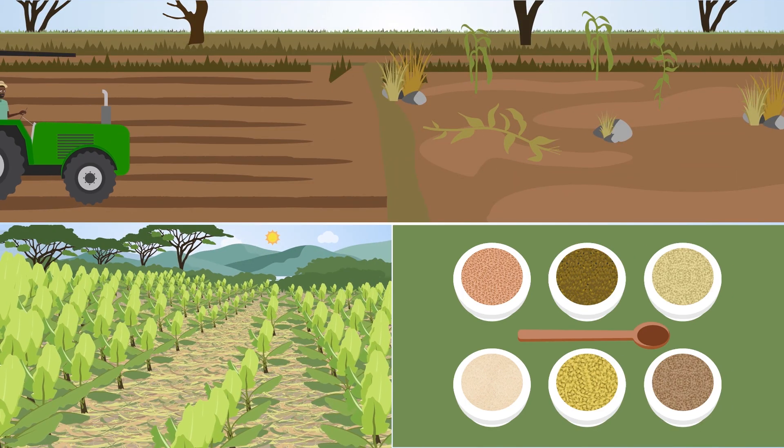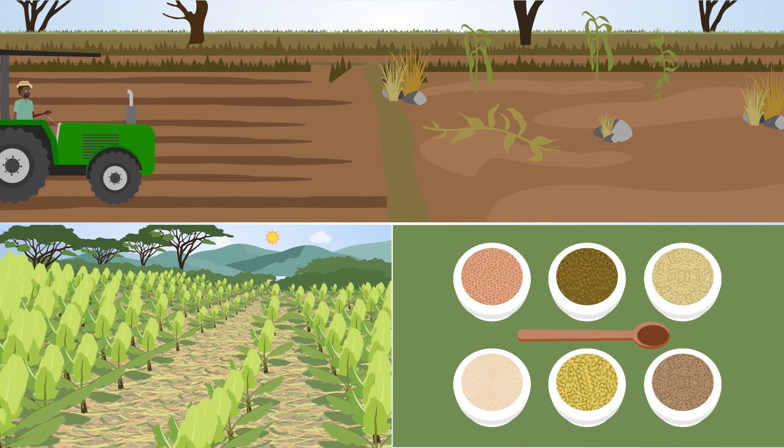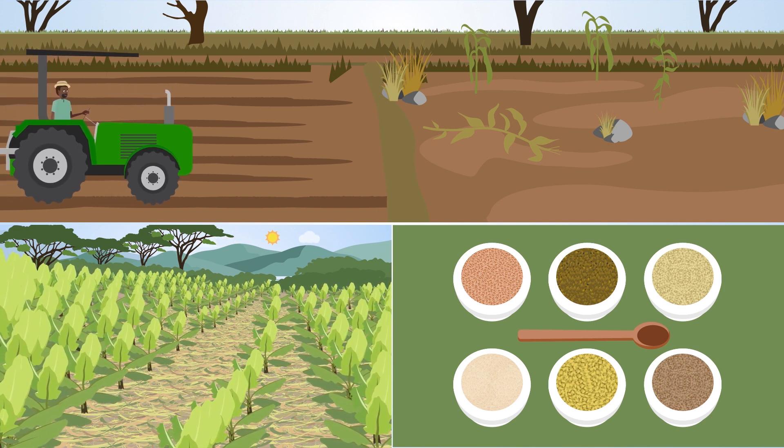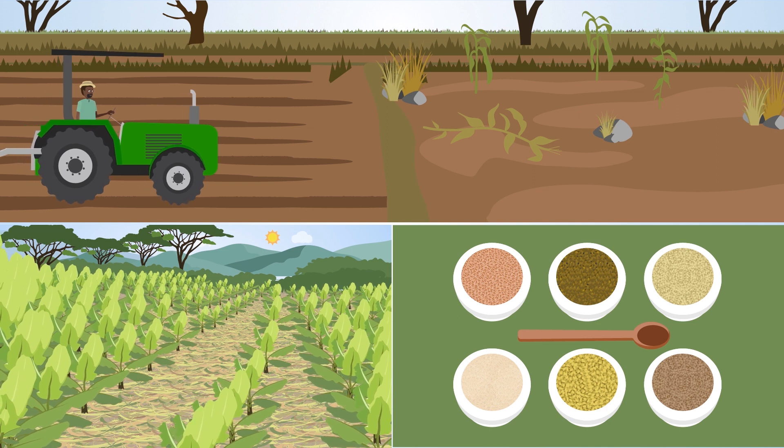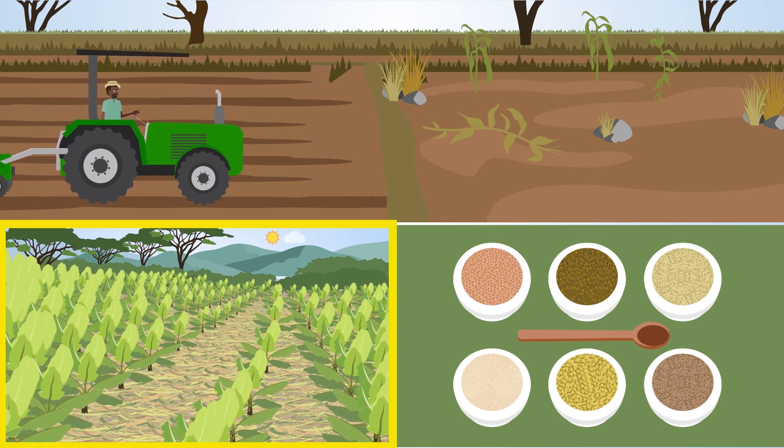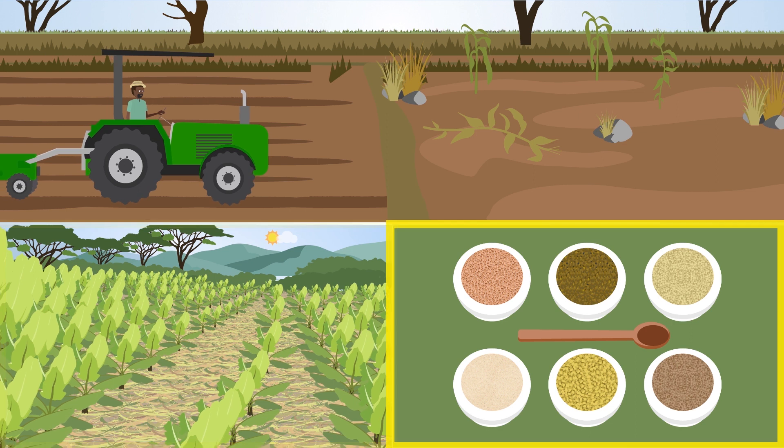Opportunities for biodiversity-friendly farming are there. Rates of land expansion are declining, and fields are left abandoned. Even more opportunities arise if harvest losses and food waste are reduced, and diets change.